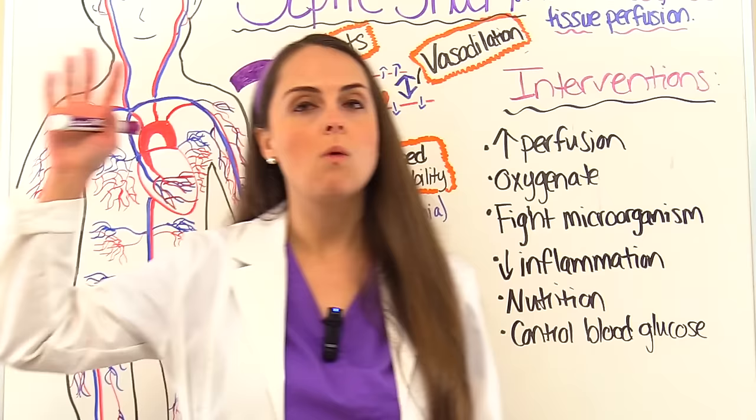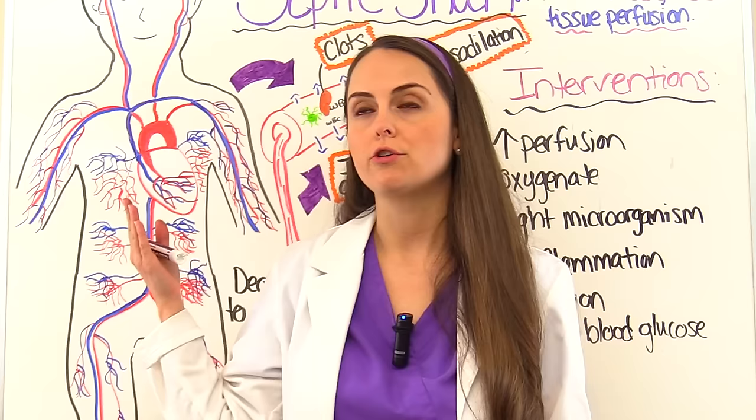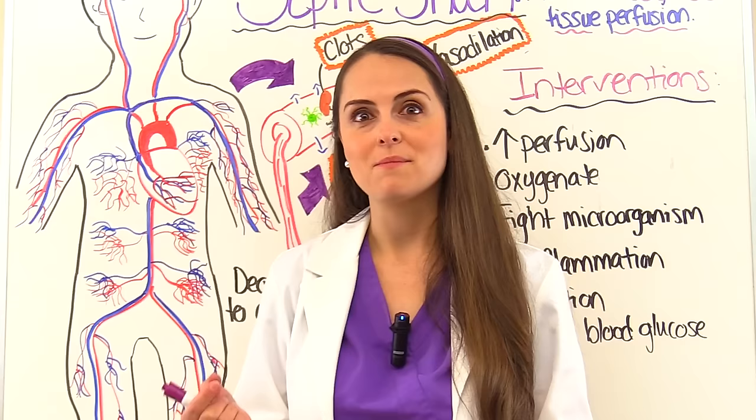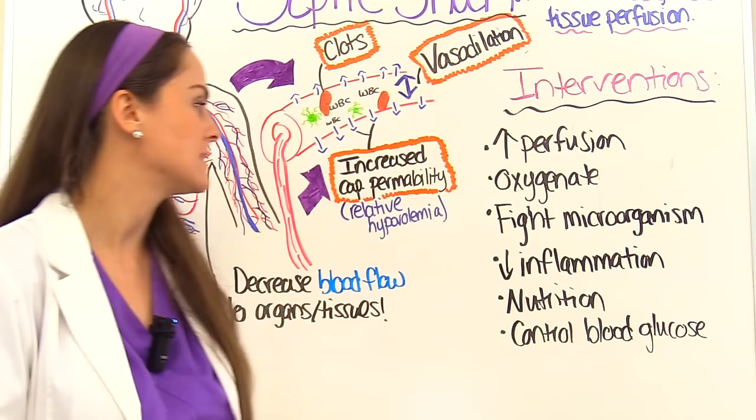Decreasing system-wide inflammation is also important — sometimes low-dose corticosteroids or activated protein C are used to help increase perfusion, given their anti-inflammatory and antithrombotic effects. Remember we have clotting issues as well. Nutrition is also important — early nutrition helps preserve gut integrity and prevents stress ulcers when tissue perfusion is decreased.